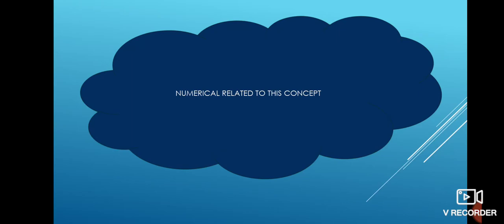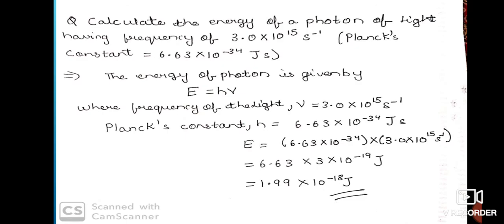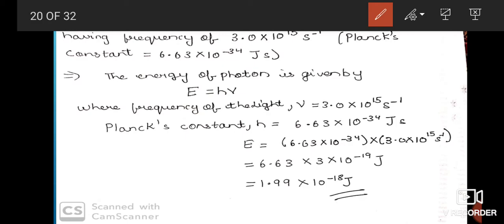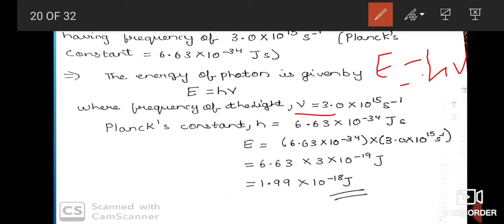Now let's see numericals related to this concept. Calculate the energy of a photon of light having frequency 3.0 × 10¹⁵ s⁻¹. Planck's constant is 6.63 × 10⁻³⁴ J·s. Energy of the photon: E = hν = 6.63 × 10⁻³⁴ × 3 × 10¹⁵. Simple numerical — just apply the concept.